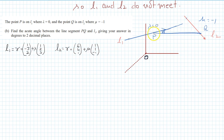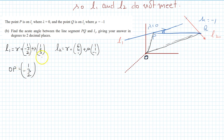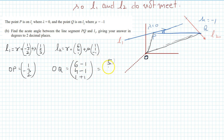P is a point on L1 where lambda equals 0, so the position vector OP equals (1, minus 3, 2). For Q on L2 with mu equals minus 1: starting from (6, 4, 1), subtracting 1 gives 5, adding minus 1 gives 3, and minus minus 1 gives 2 for the k component. So OQ equals (5, 3, 2).